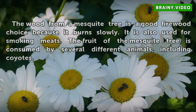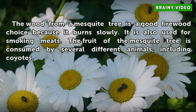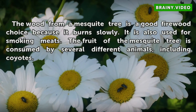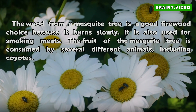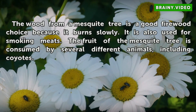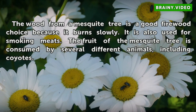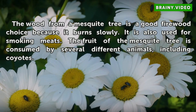The wood from a mesquite tree is a good firewood choice because it burns slowly. It is also used for smoking meats. The fruit of the mesquite tree is consumed by several different animals, including coyotes.